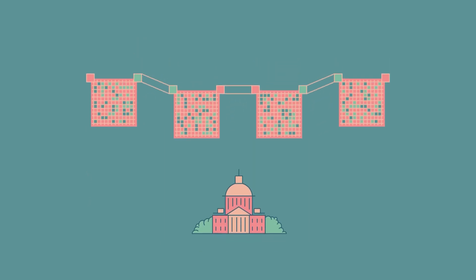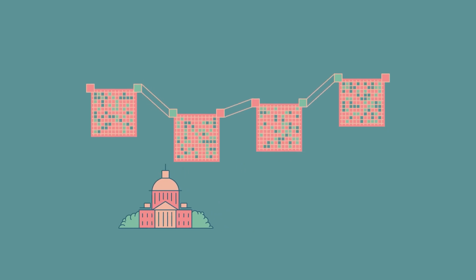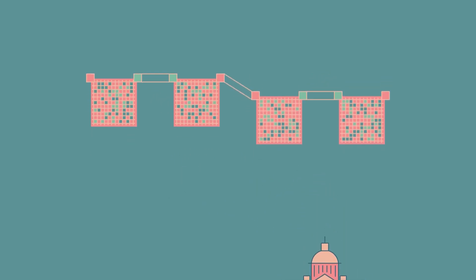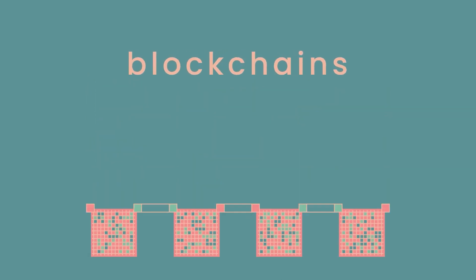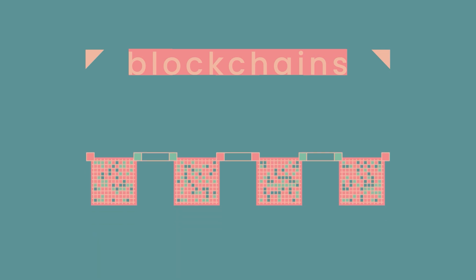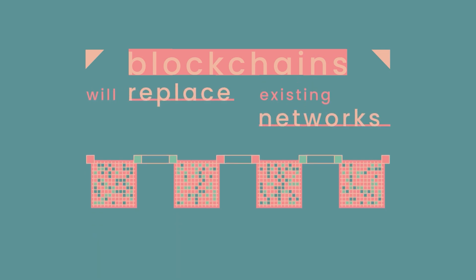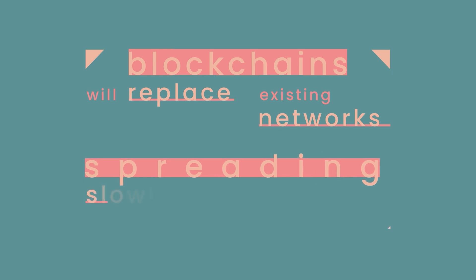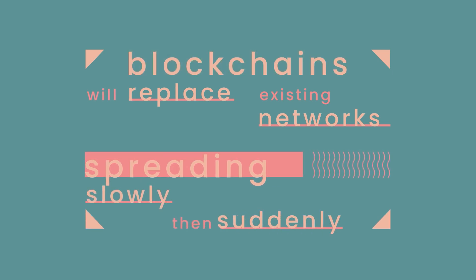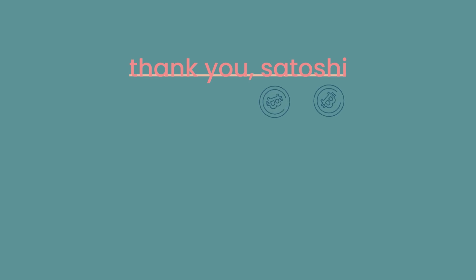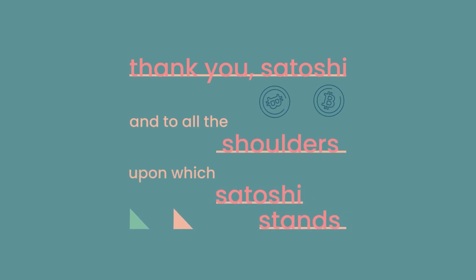Likewise, to have a blockchain controlled by a centralized party is foolish. Blockchains give us new ways to govern networks. Blockchain-based market networks will replace existing networks — spreading slowly, then suddenly. Thank you Satoshi Nakamoto, the anonymous creator of Bitcoin, and to all the shoulders upon which Satoshi stands.